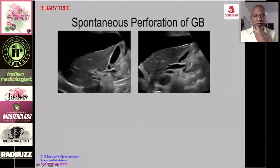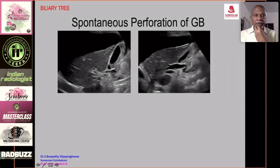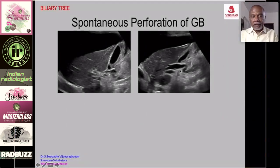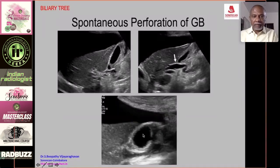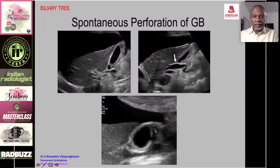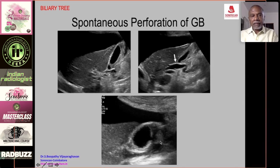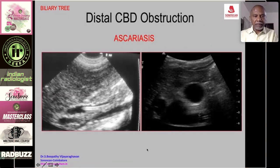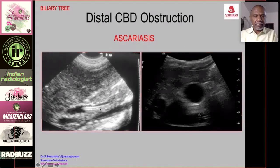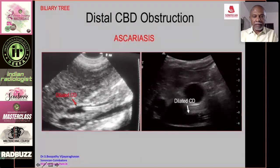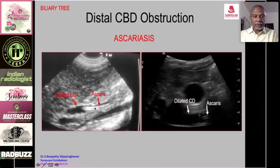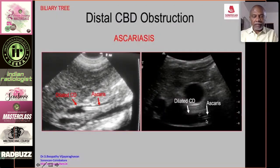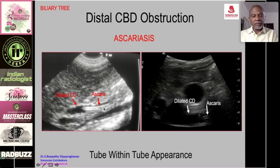A rare complication of obstructive jaundice is spontaneous perforation of the gallbladder. Ascites due to bile leak is seen, along with a dilated CBD. With high-frequency imaging, thick walls of the gallbladder are seen due to a breach causing bile leakage. Obstruction may also be due to ascariasis — the ascaris worm is seen as another tube within the CBD, called the tube-within-tube appearance causing obstructive jaundice.